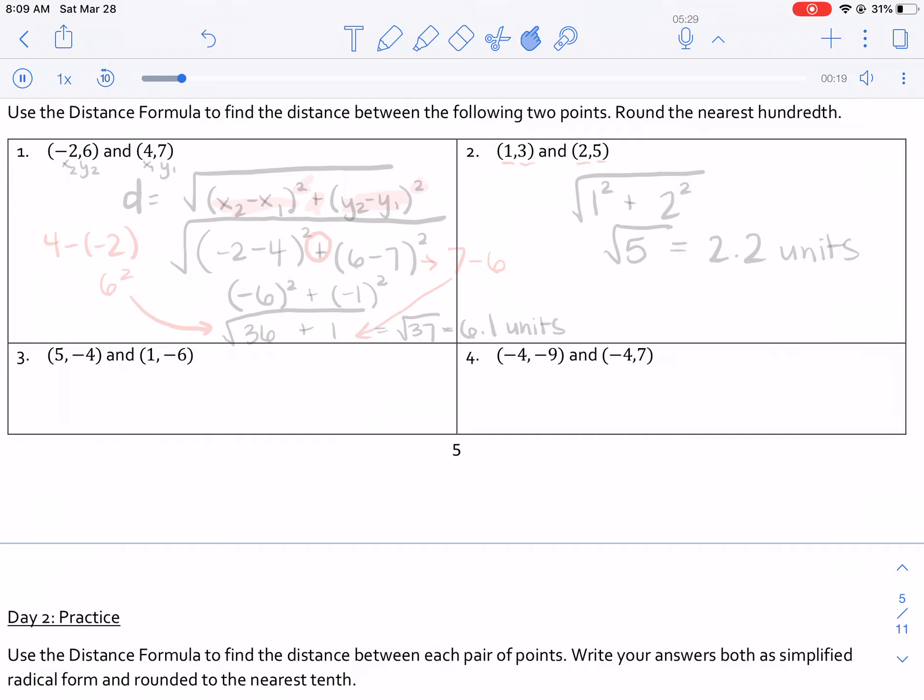And it's actually, because of the nature of the Pythagorean theorem, a lot easier than it looks. So our distance formula is d equals the square root of, in parentheses, x2 minus x1 squared plus y2 minus y1 squared.